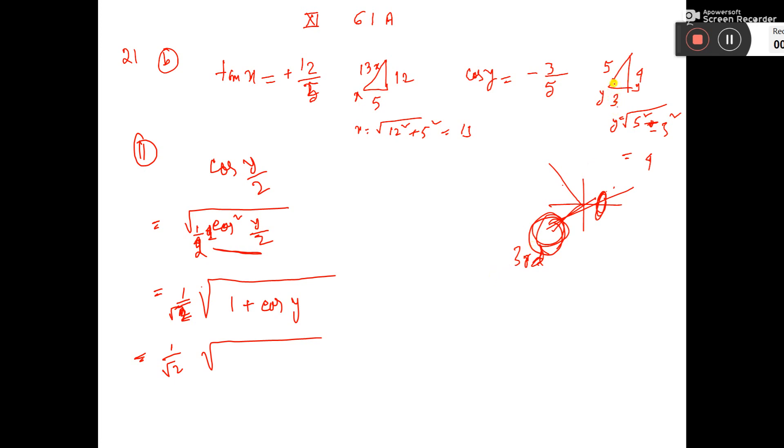This is y. So cos is base by hypotenuse, that is 1 minus 3 by 5. See here, cos is base by hypotenuse, 3 by 5, and we have to put a minus sign. Here plus and here a minus sign.